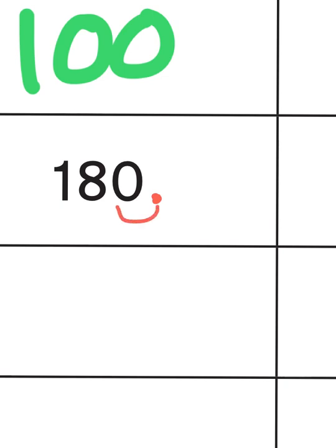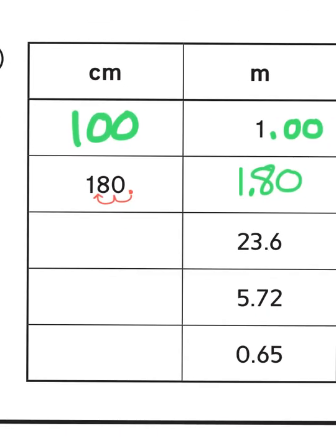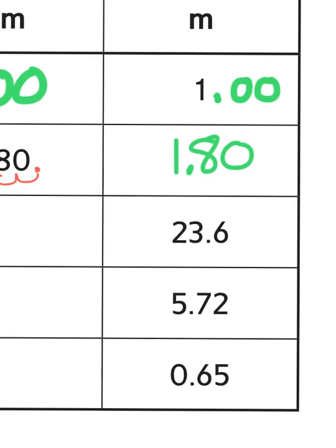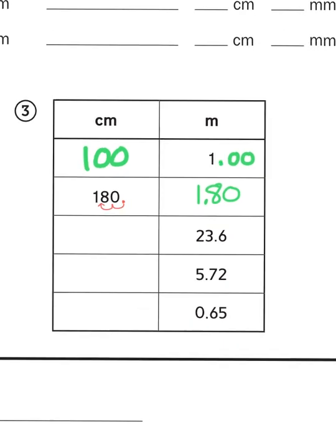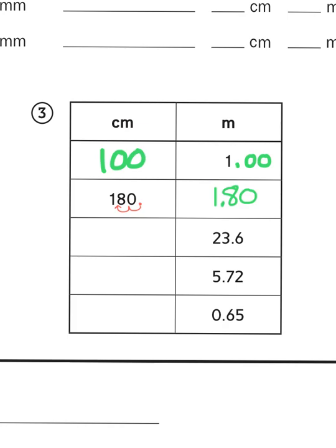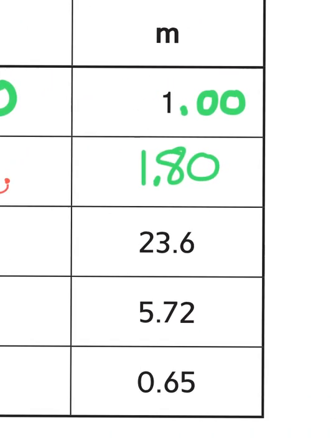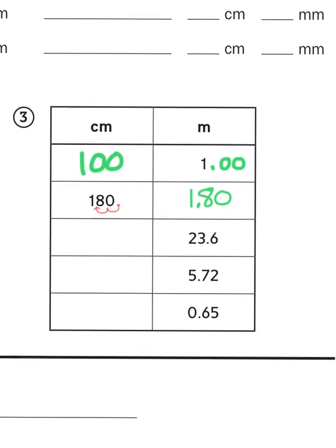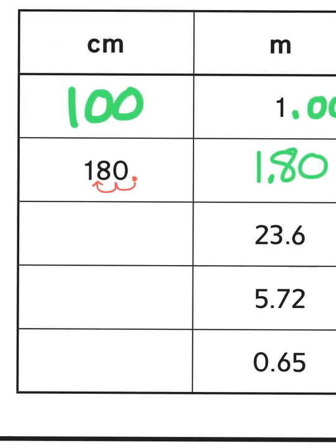I'm going to take that decimal point and move it 1, 2 places over. So 180 centimeters becomes 1.8 meters. So the last example I'll do is this one right here. 23.6 meters. So 23.6 times 100, if it was whole numbers, I would just add 2 zeros. But what I'm really going to do is I'm going to add 2 place values.